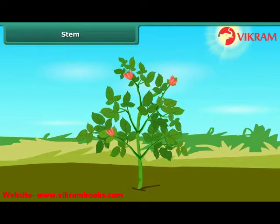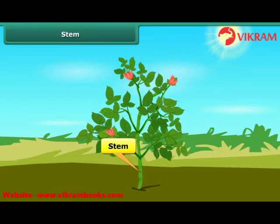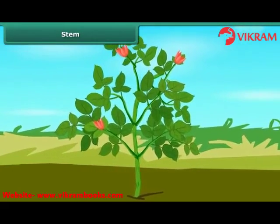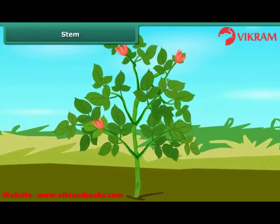The other important part of the plant body is the stem. The stem forms the main axis of the plant body, which grows towards light and away from gravity. It holds the plant body upright, bears leaves, flowers, and fruits, and exposes them to sunlight and air.